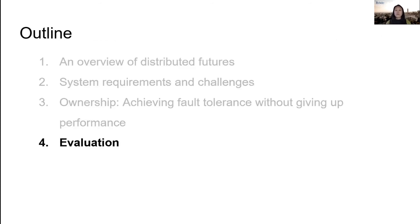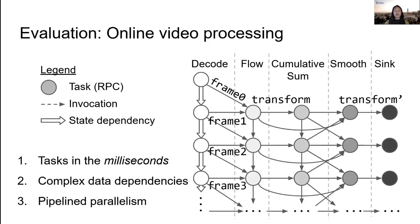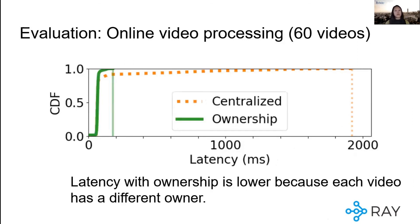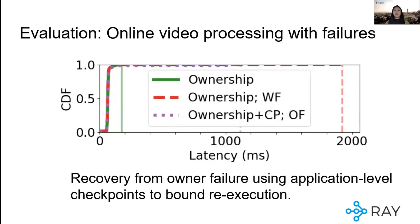We implemented ownership in Ray, an open-source system for distributed futures. To show the benefits of ownership, one of our applications was online video processing, where we run a video stabilization algorithm over a live stream and measure the time to process each frame. This is a challenging application because tasks are milliseconds long, the data dependencies are complex, and the latency requirement is strict. Since we want to produce the output at frame rate, we can't afford to use batch parallelism. We have to process each frame individually, and so we rely on pipelining to scale out. Compared to a centralized architecture, the latency with ownership is much lower, and that's because each video stream is owned by a different worker, and so we can decentralize the system metadata across the owners and keep metadata writes local. When a task fails, the system recovers by having its owner recreate the task and any of the task's missing dependencies. And if an owner fails, the system recovers by re-executing its children and restarting the owner. We can bound re-execution of the owner by using lightweight application-level checkpoints.